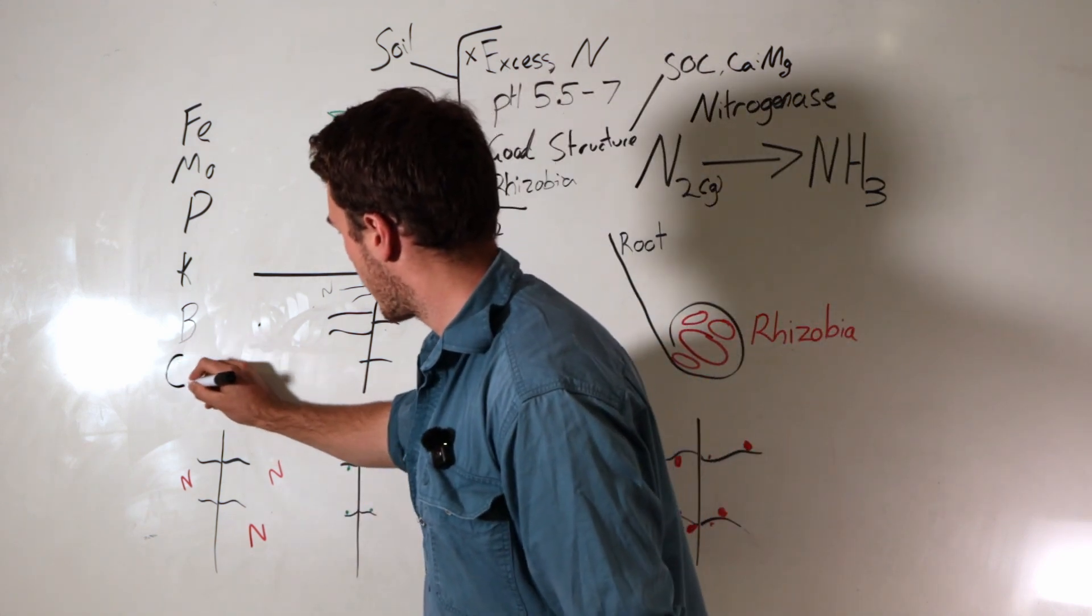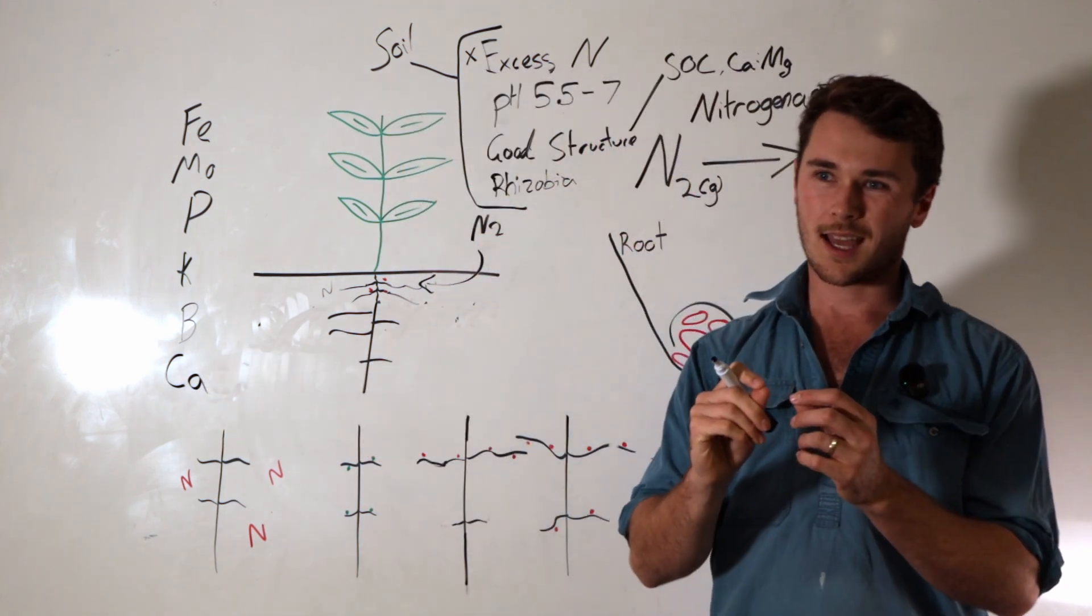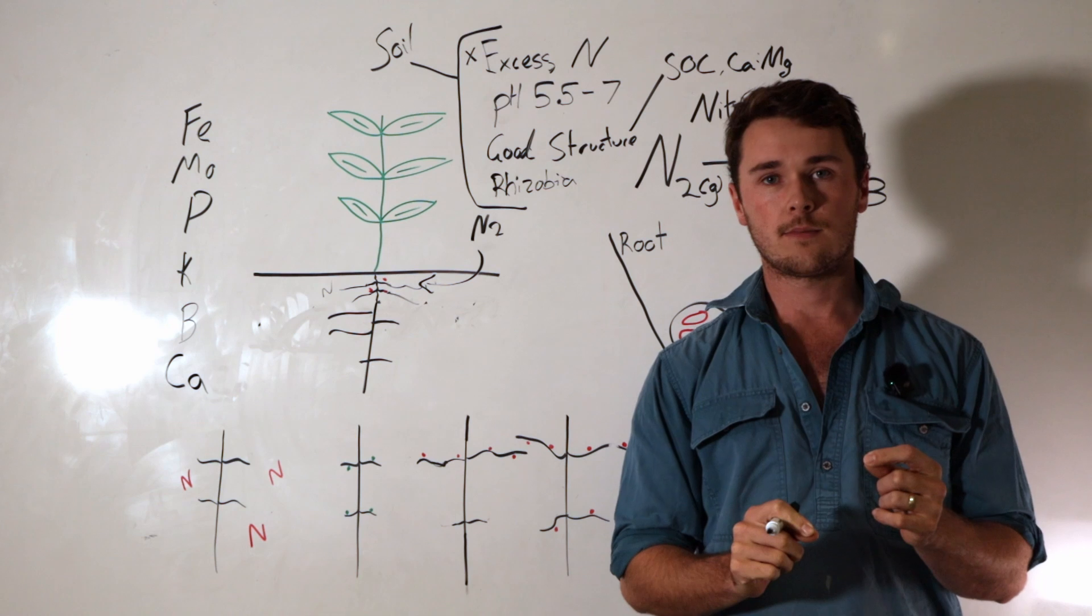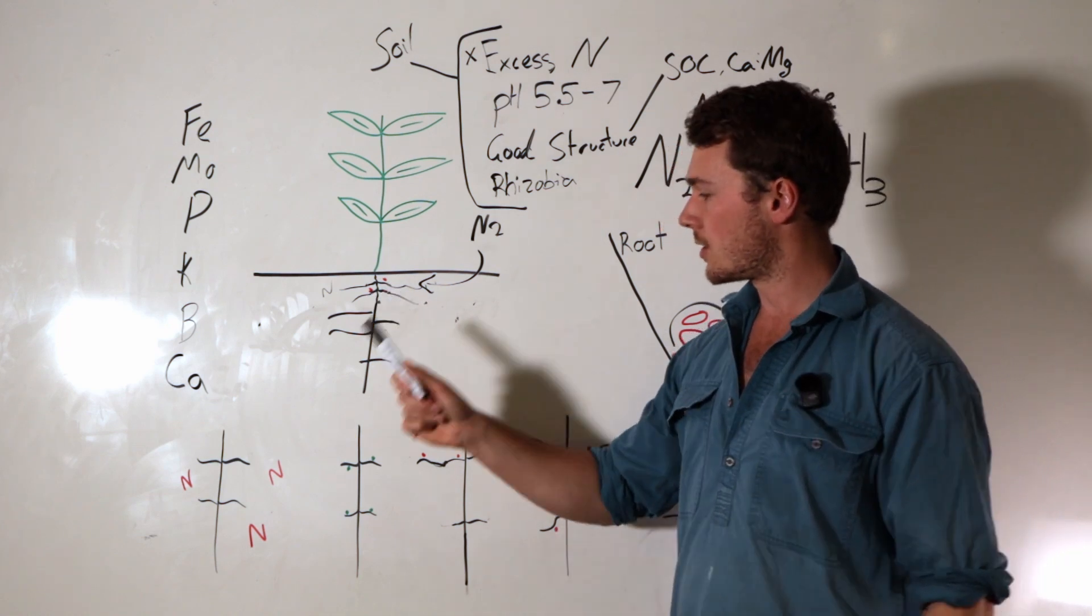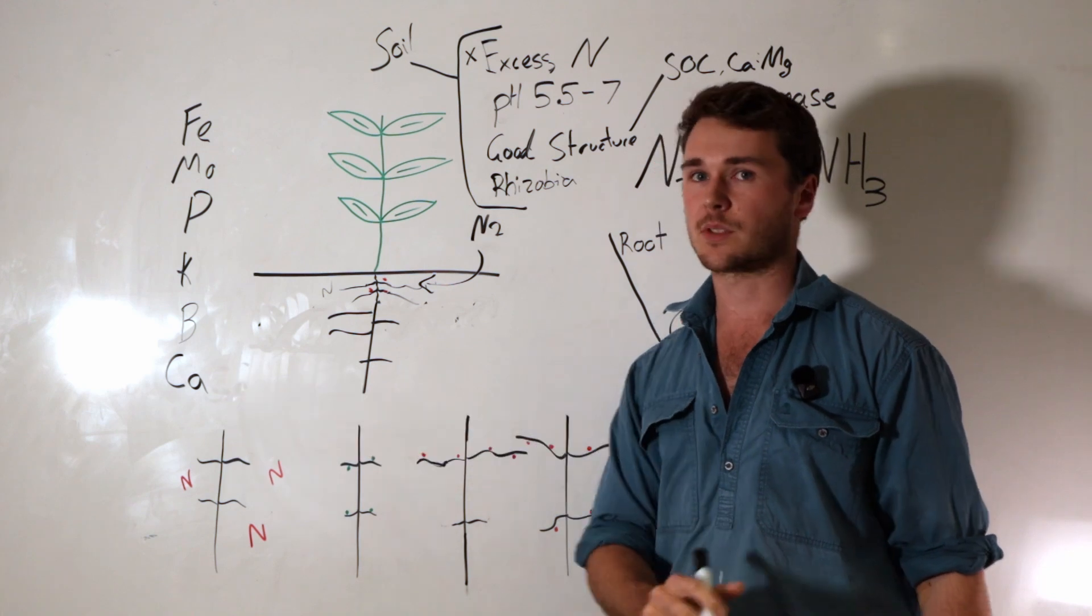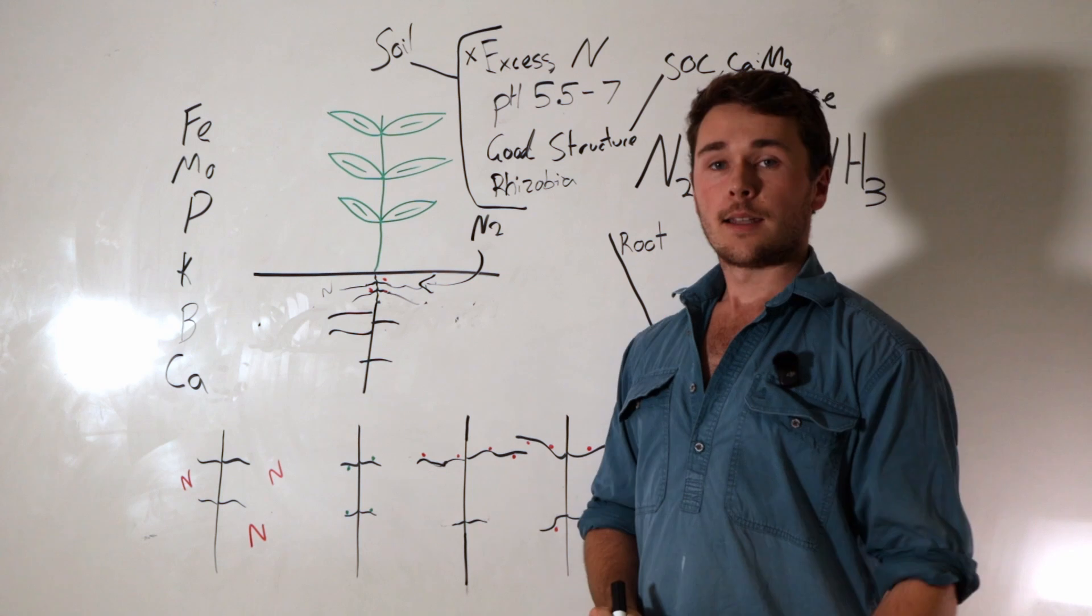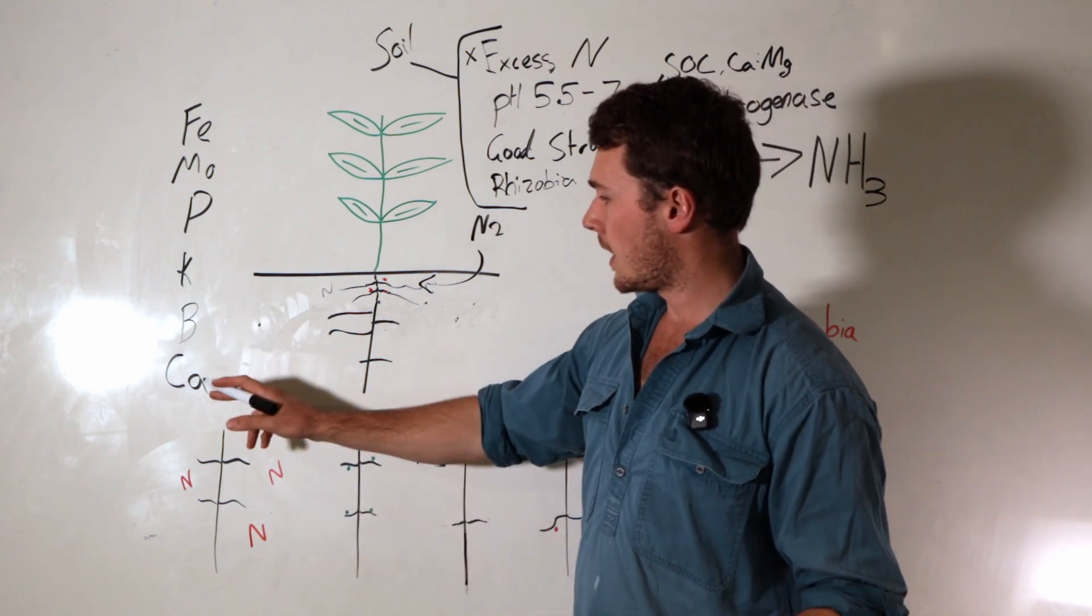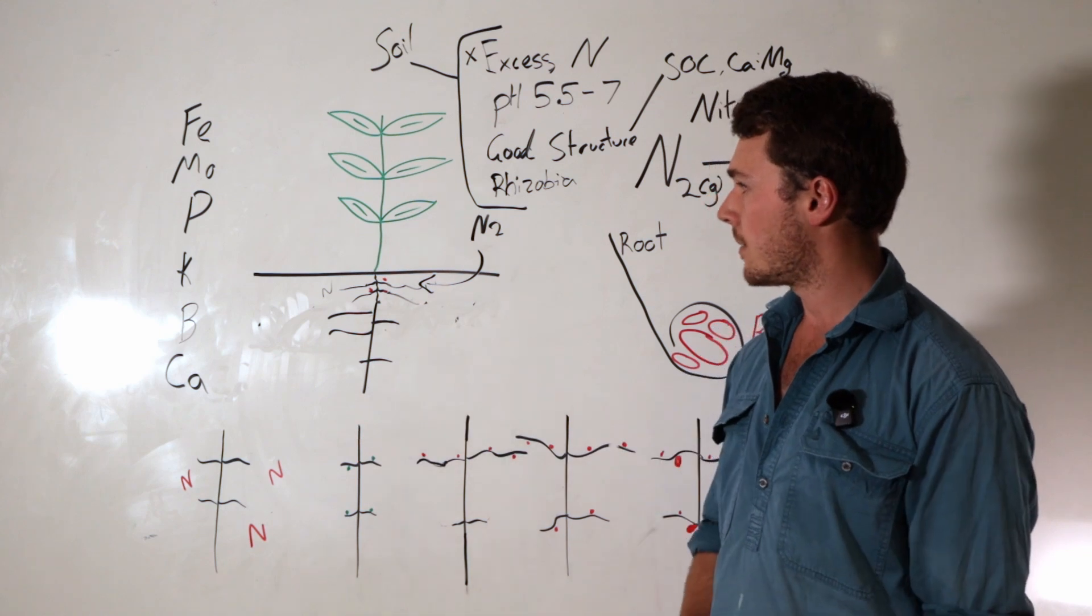Next is calcium. Calcium is required for that initial triggering of the communication of the starting nodulation. So we want to make sure we have a good amount of calcium supplied to the crop too. We can get that with our liming application beforehand. Now, good thing is our boron and our calcium are synergistic. They help each other as well.